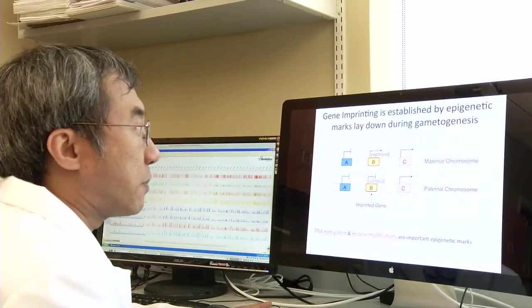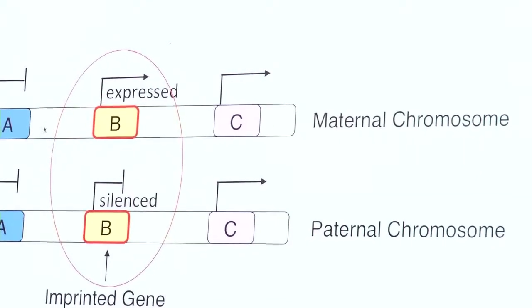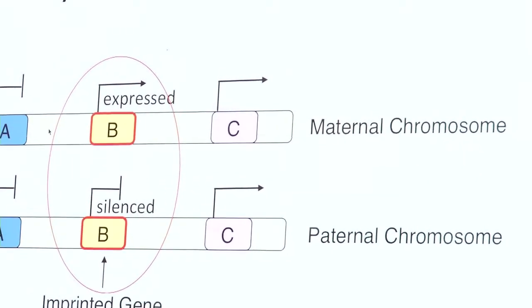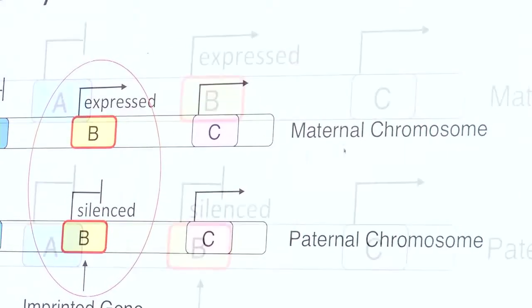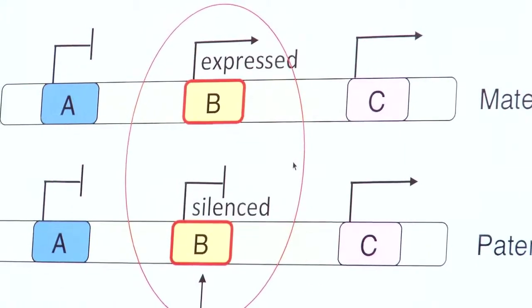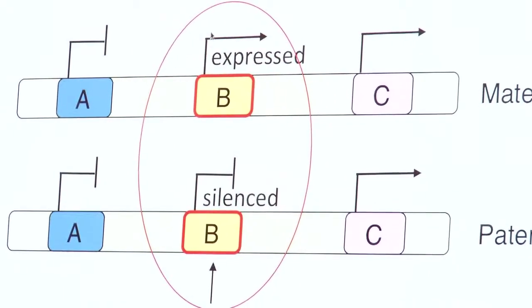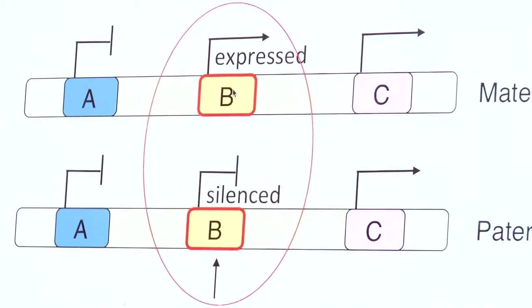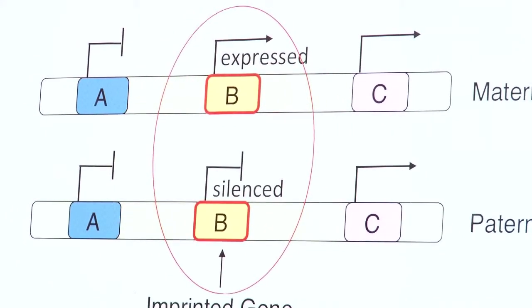For example, every one of us inherits one chromosome from our mother and one from our father. For most genes, the genes from both chromosomes behave the same. In other words, either both copies are active or both copies are silent or inactive.